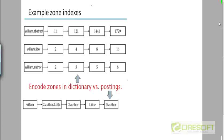A student asked: in the abstract, are the indexes being created identical to the indexes in the zones, and do they go through the same lemmatization, stemming, and all those things?